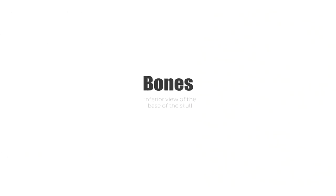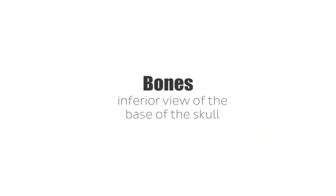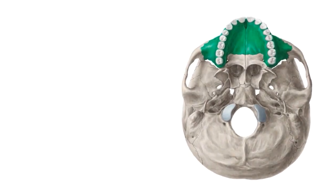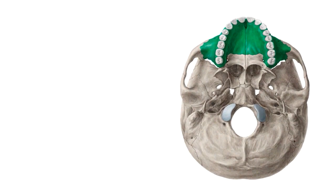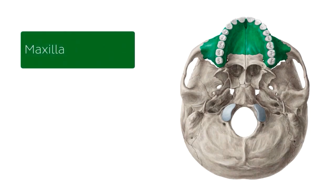Let's start with the very first topic: the bones that we find on the inferior view of your skull. The first one I'm going to highlight, found on the anterior portion of the skull or the base of the skull, is the maxilla. From this aspect, we see the inferior aspect of this bone, which is essentially your upper jaw, which houses the upper teeth. It plays an important role in mastication or chewing and also during communication.